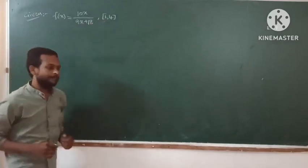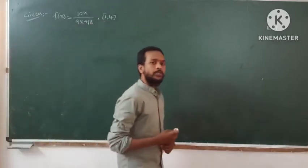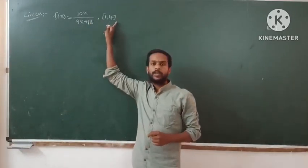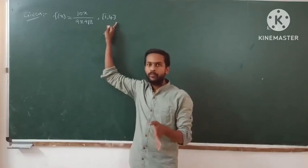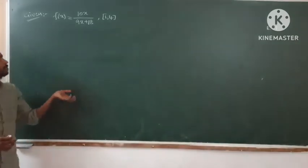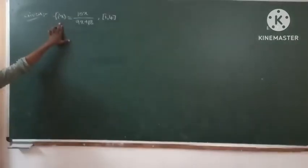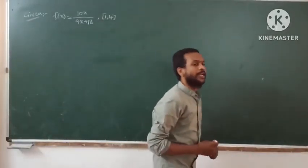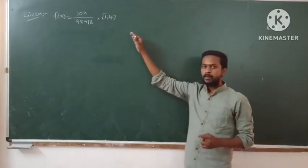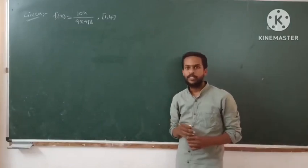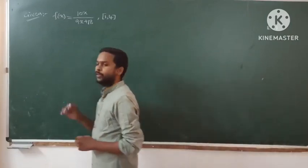If you want to use Rolle's mean value theorem, there should be f(1) equal to f(4). If you want to use Lagrange's mean value theorem, f(1) should not equal f(4). And if you want to use Cauchy's mean value theorem, there should be two functions f(x) and g(x). Here we have only one function, so we can use either Rolle's or Lagrange's mean value theorem.